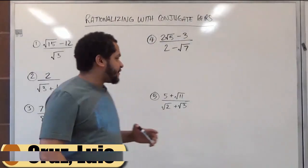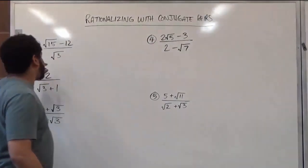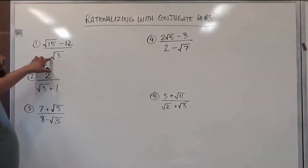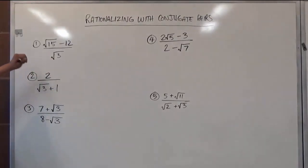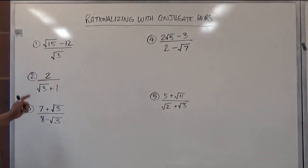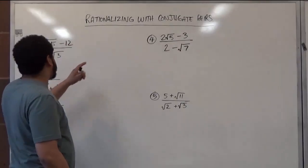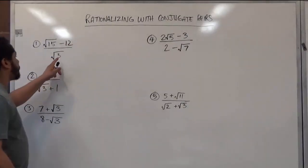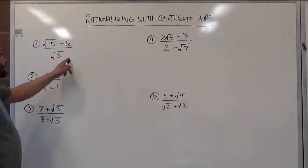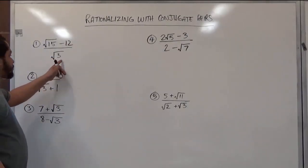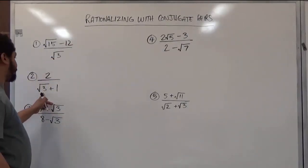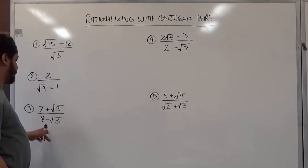This is very similar to just rationalizing any denominator with any square root. The only difference is when rationalizing a denominator with a conjugate pair, we'll have a sum or difference of square roots, or square roots with numbers.